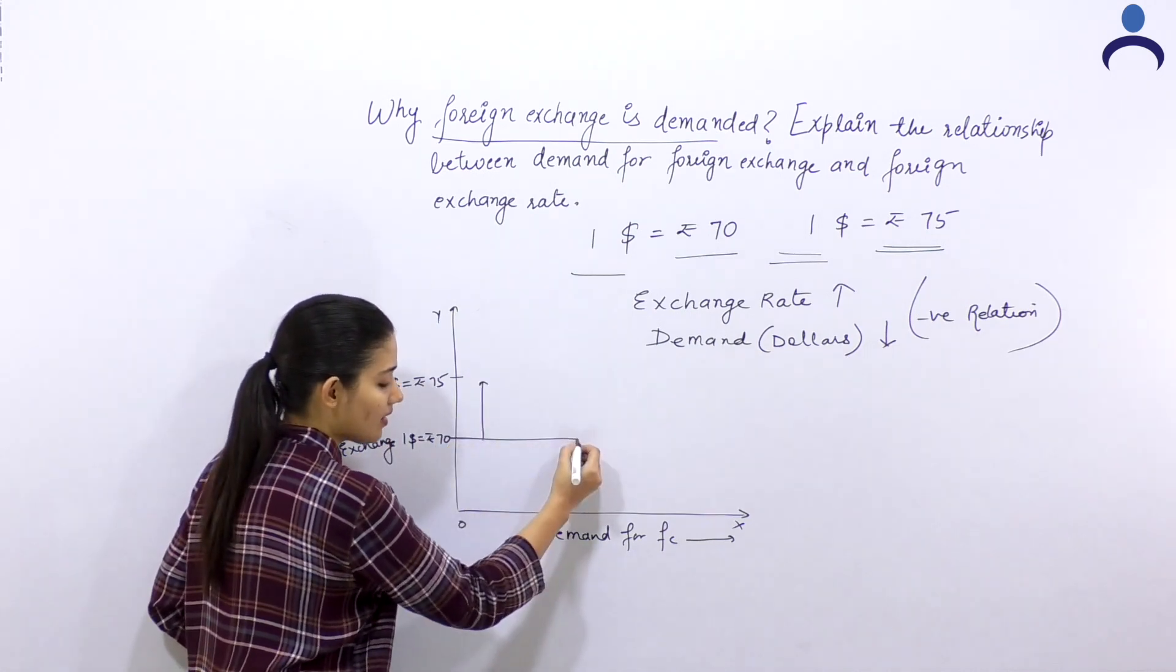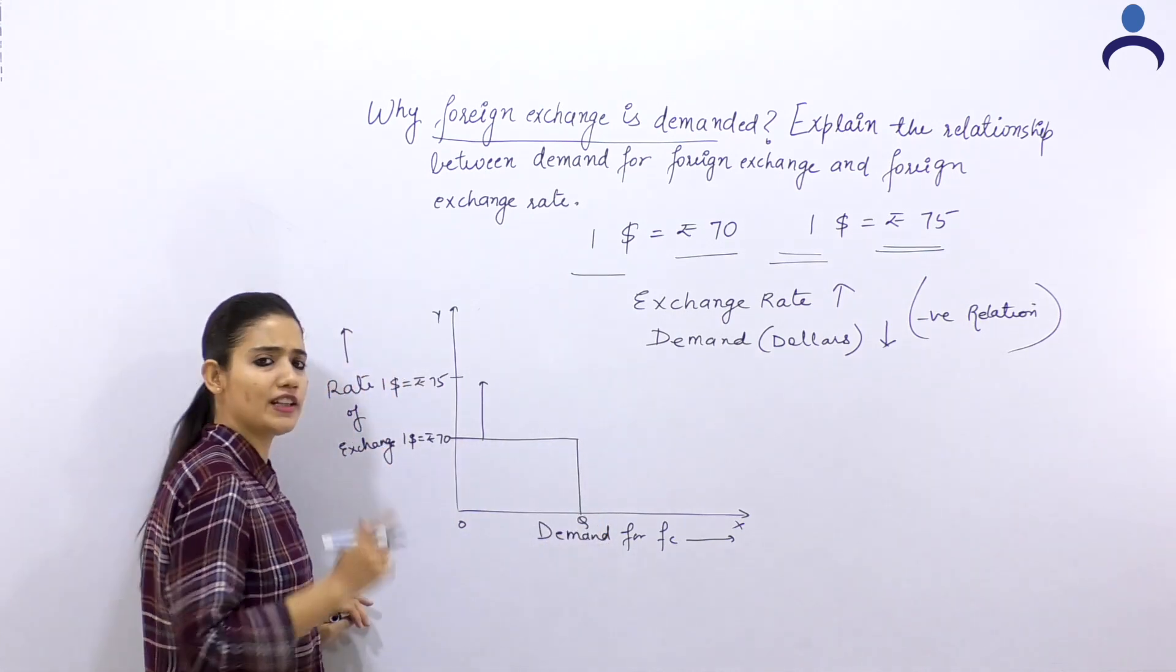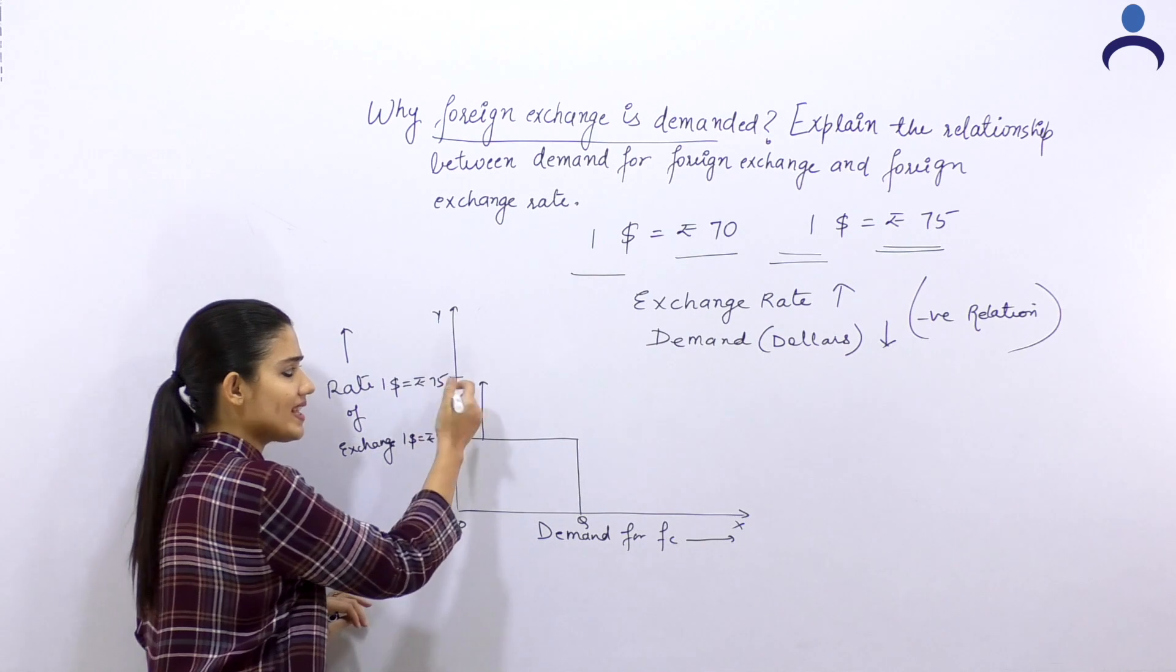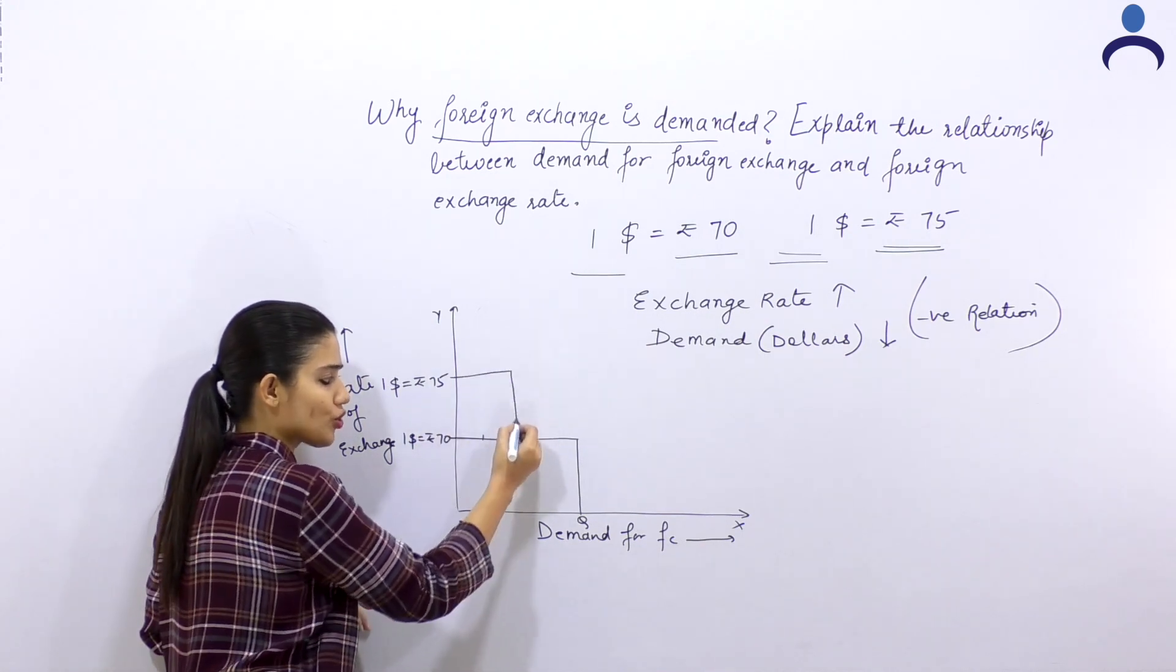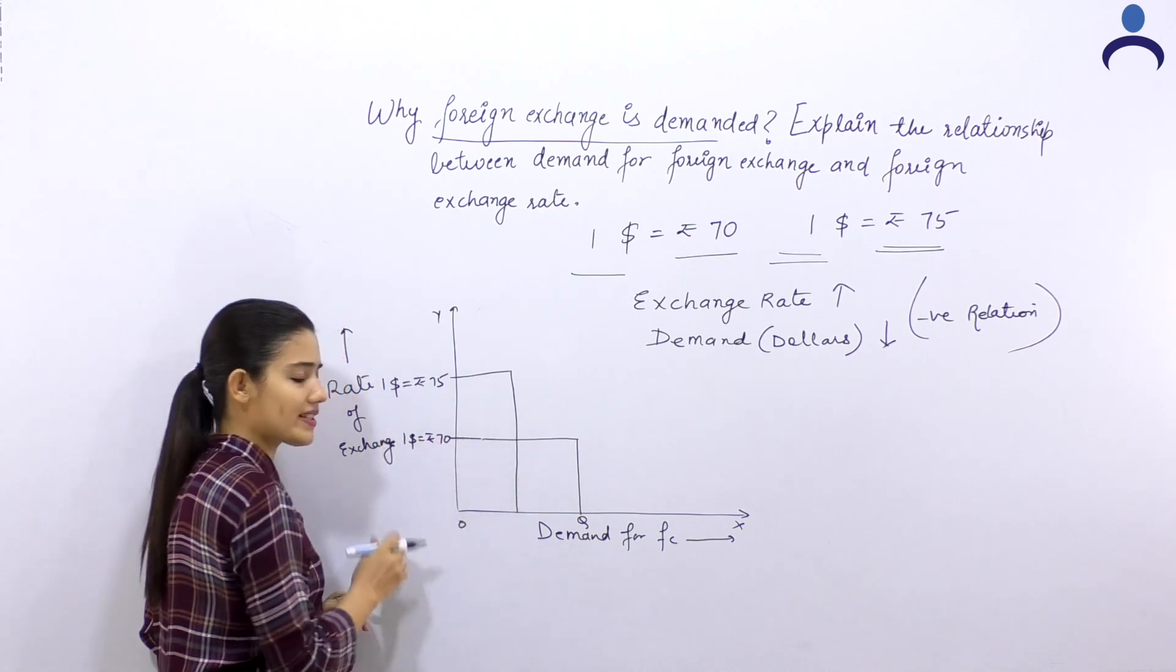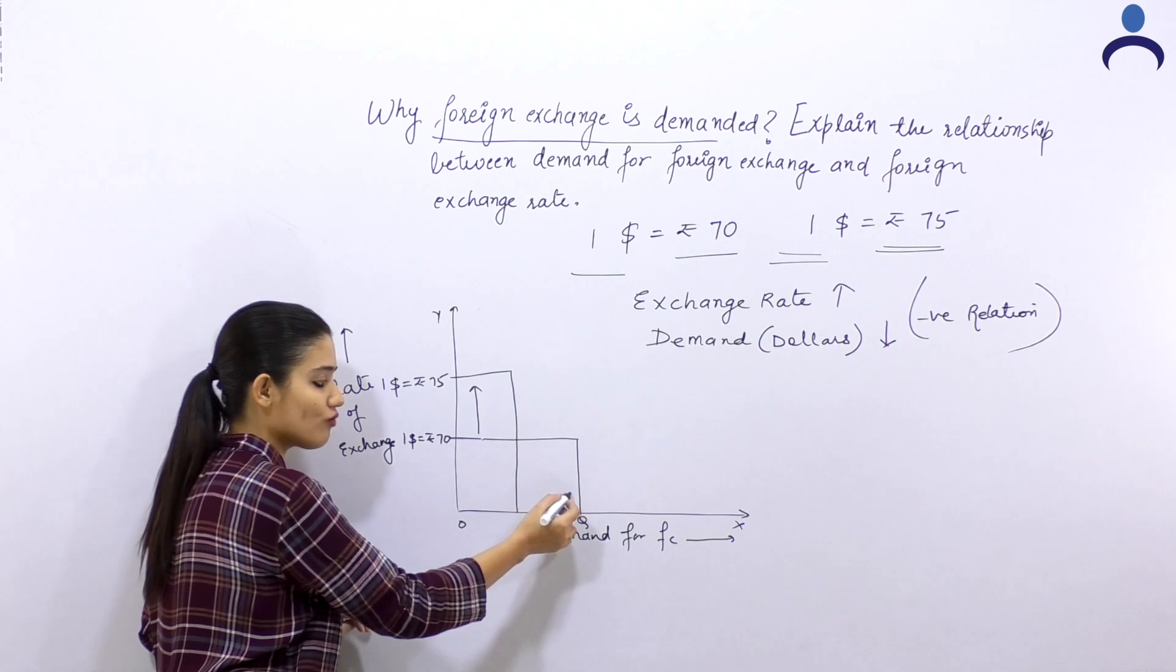For example, when it was $1 equals ₹70, I was purchasing this quantity. As it increased, the demand of the foreign currency was decreased. As it went from 70 to 75, I reduced the demand.